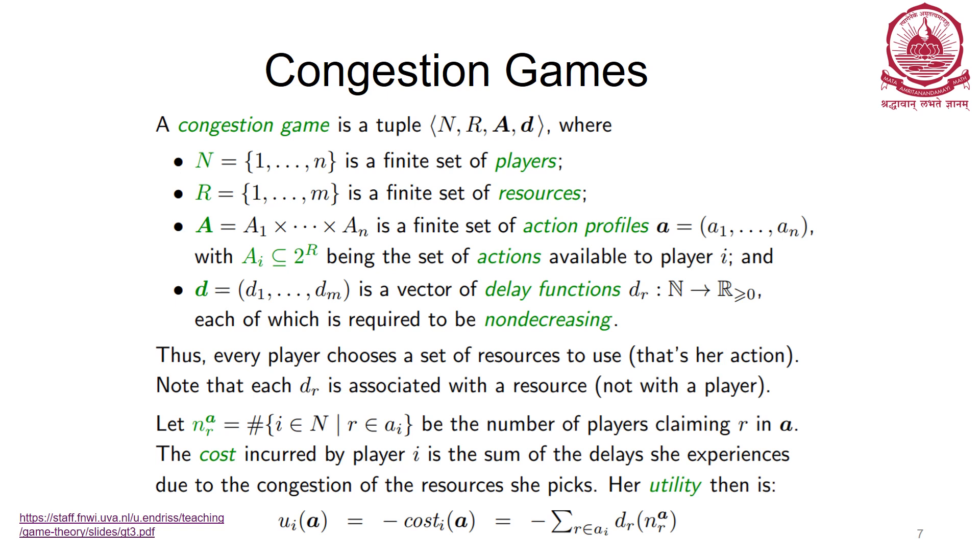Thus, every player chooses a set of resources to use, and each resource has an associated delay. The utility is minus the cost incurred. So the cost incurred is typically the sum of delays he or she is experiencing due to congestion of the resources the player has picked.